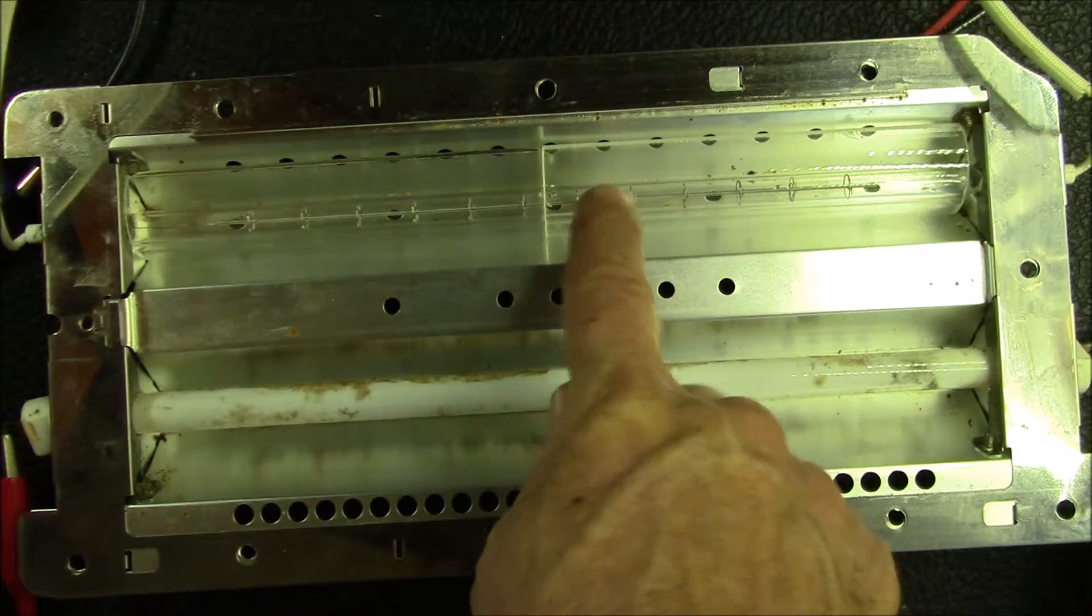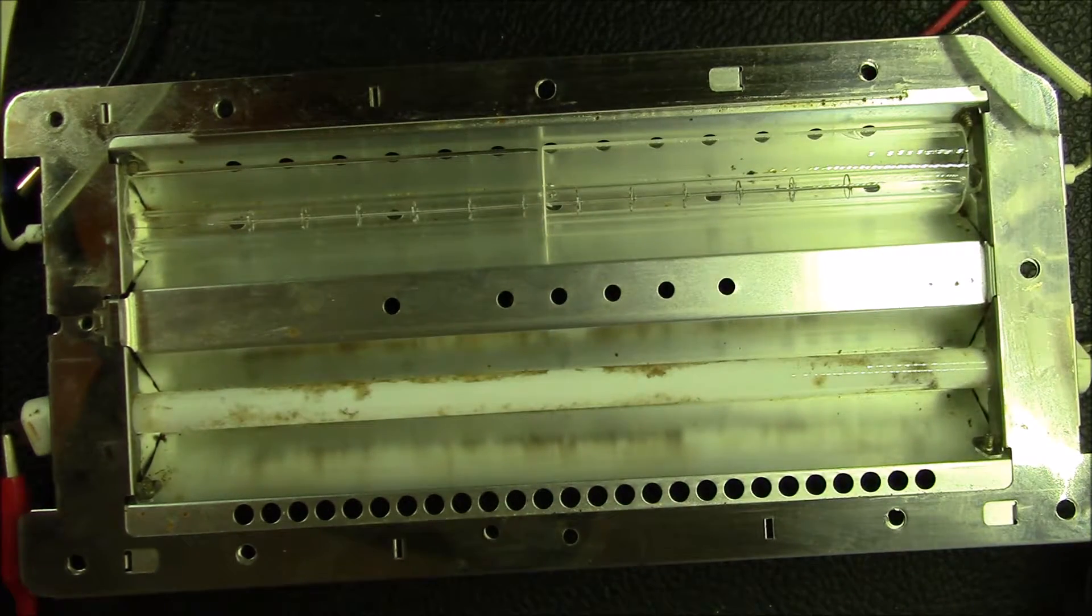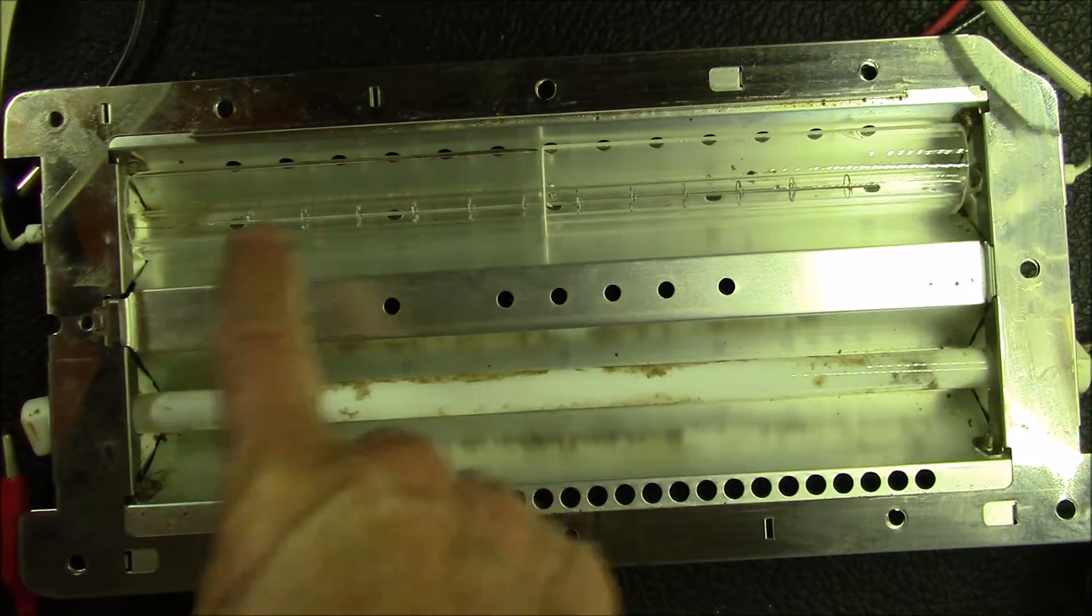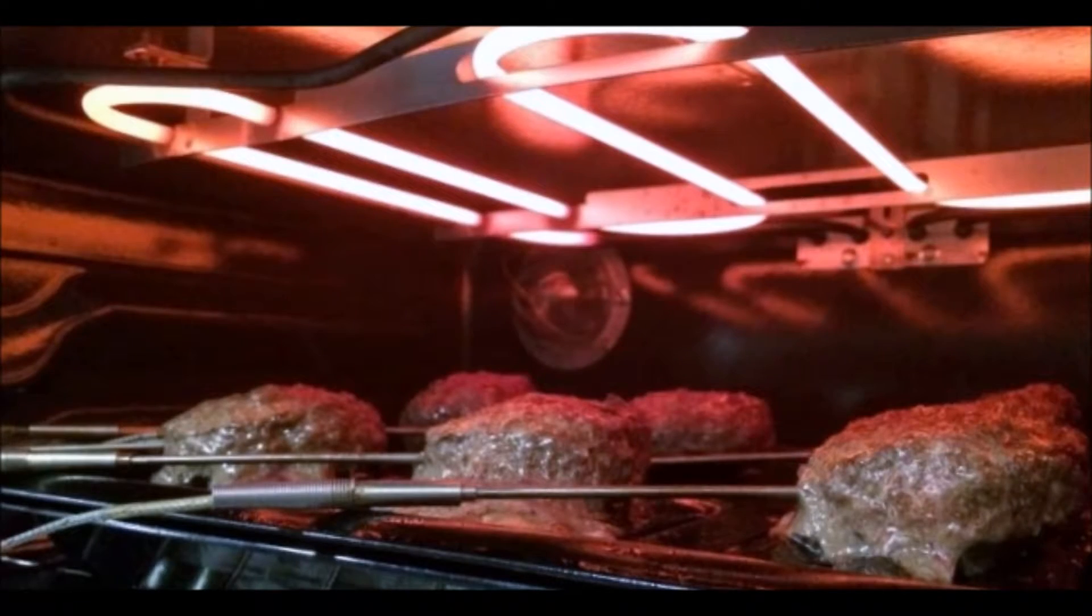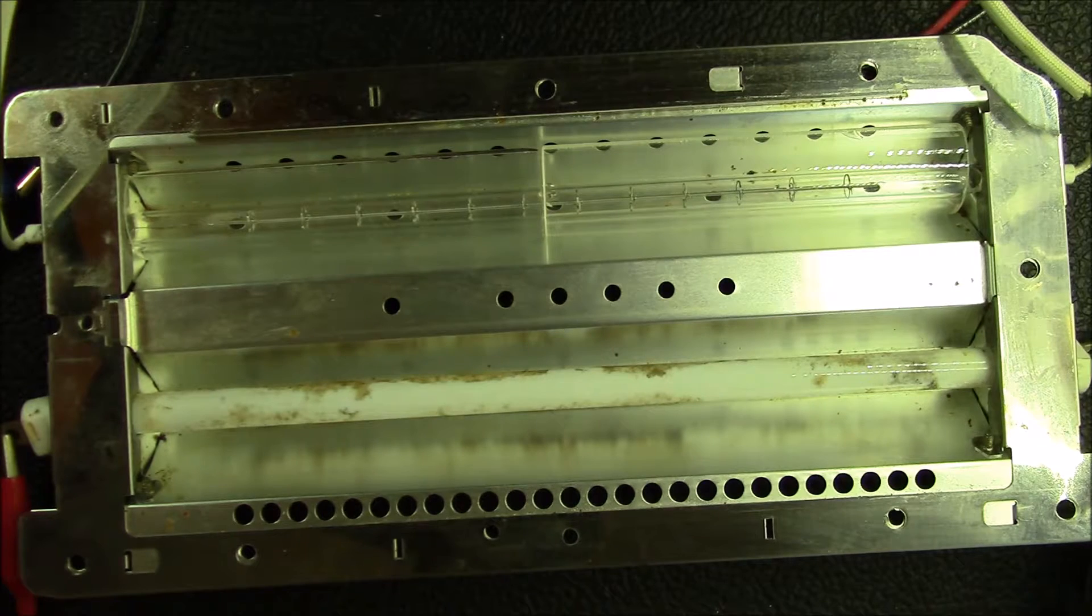If one fingerprint on a bulb like this can shorten its life, you can imagine putting this bulb over some hot sizzling food in your oven. It's going to get splattered like crazy.